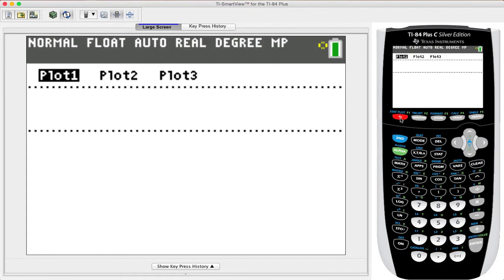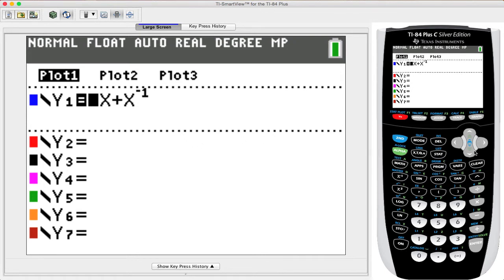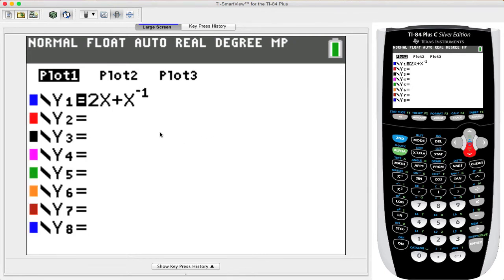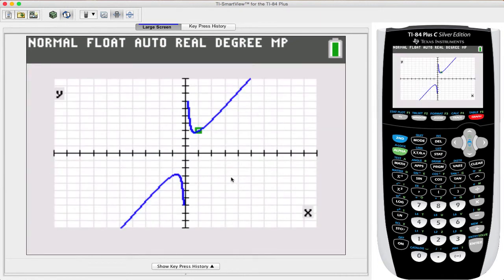All right, with the calculator, press Y equals. Notice I already have the function in place, and now let's go ahead and graph it. With the graph, you'll notice that I also put the point on here with the green box around it at the point (1, 3).